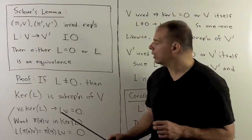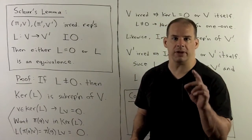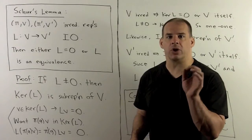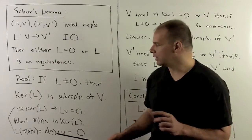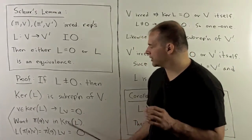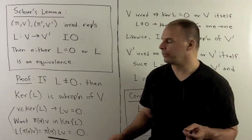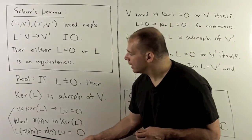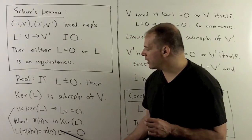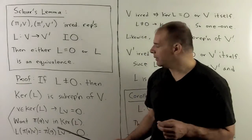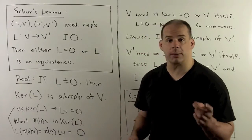For the proof, we'll assume L is non-zero. I first want to show that the kernel of L is a sub-representation of V. So that just means if I take any vector in the kernel of L and apply any pi of g, we get another element that's in the kernel of L. Now if v is in the kernel of L, that says L of v is zero, so I want to show that L of pi(g)v is also zero. The intertwining operator property allows us to move g to the outside as pi prime of g, then we have L of v. Since L of v is zero, this equals zero, showing pi(g)v is also in the kernel of L — so it's a sub-representation.